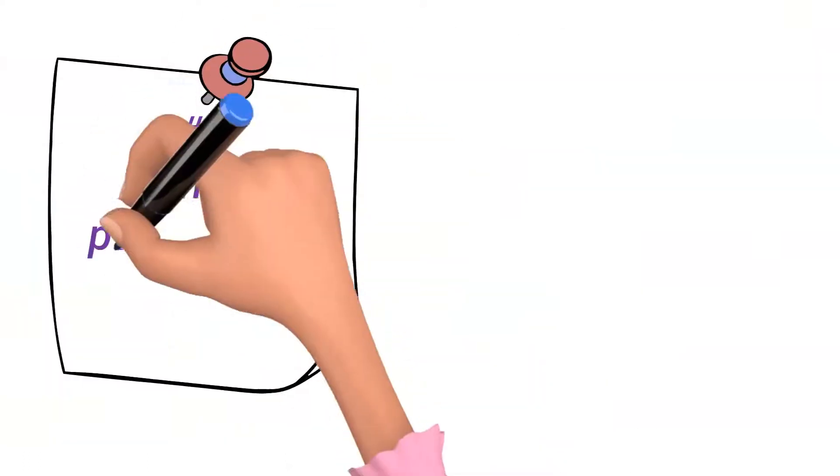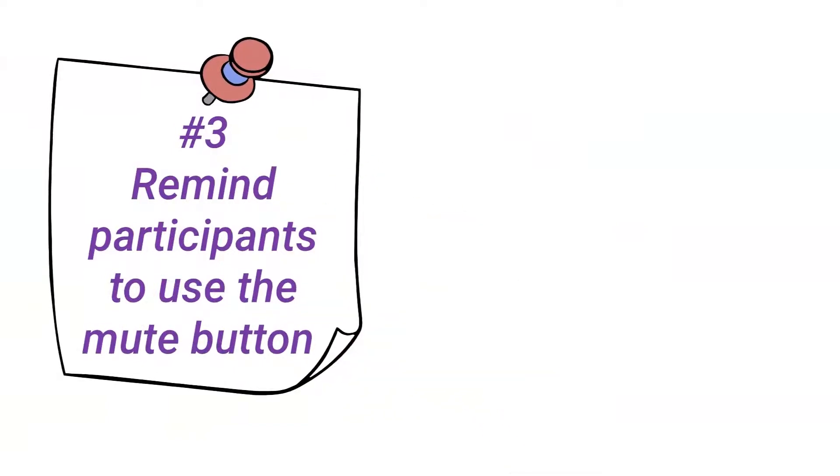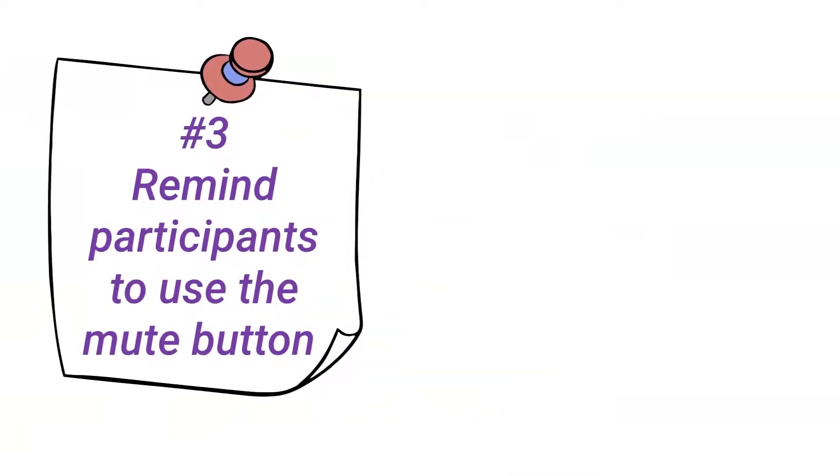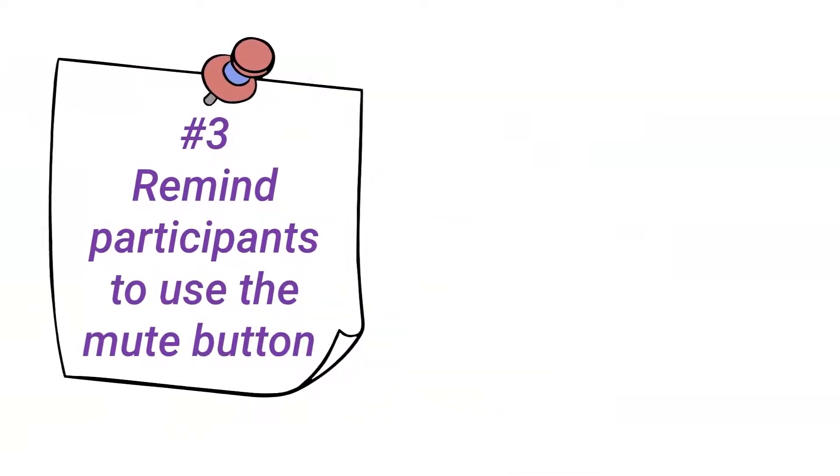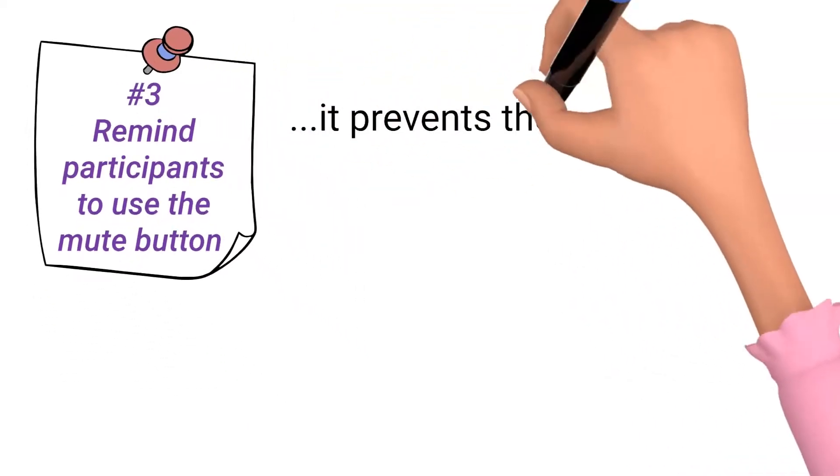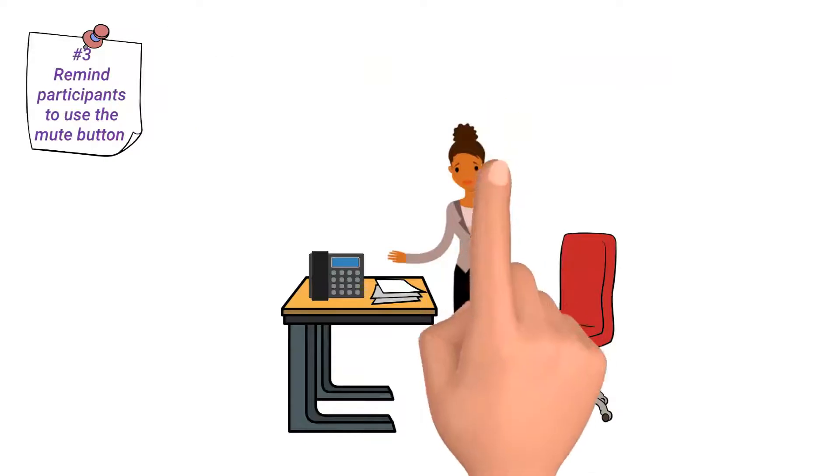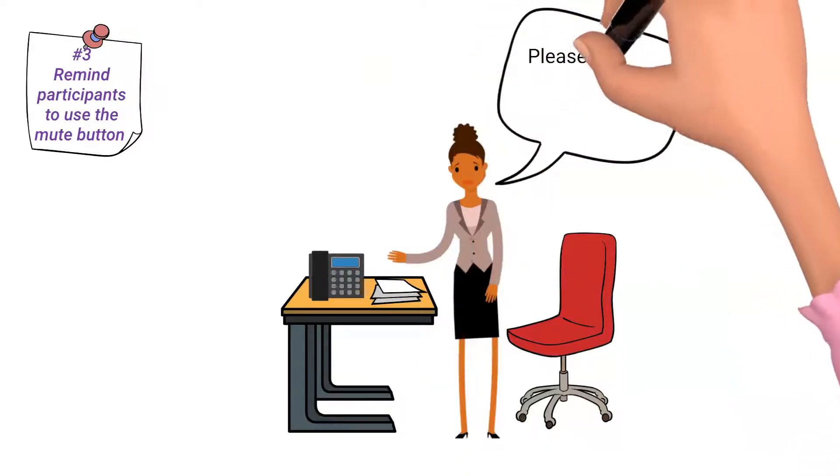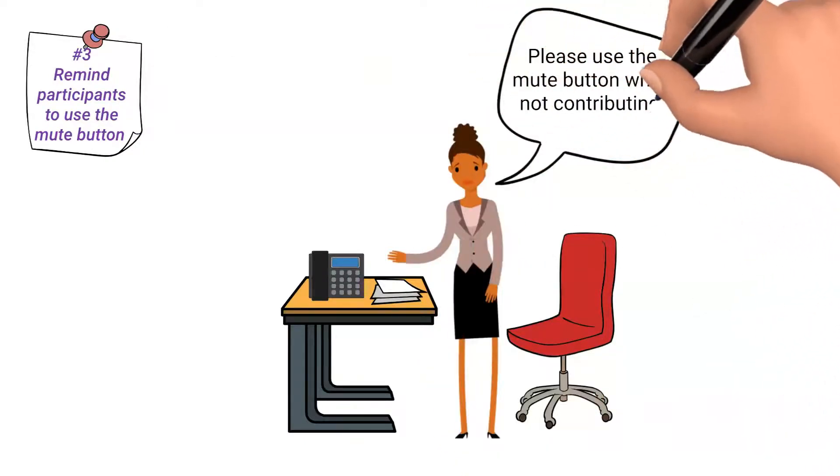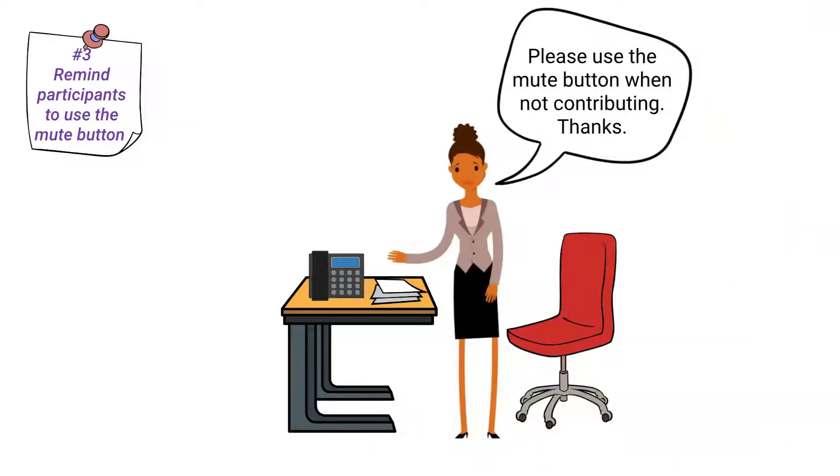Number 3. Remind participants to use the mute button when not contributing. This is an important conference call meeting etiquette practice as it prevents the speaker being interrupted by unnecessary sound and feedback from the equipment of other participants. Also, it ensures any alternate conversations during the meeting do not disrupt the flow of the meeting.